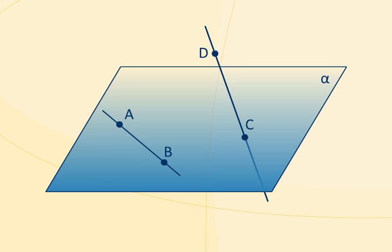Let's prove that the lines AB and DC are skew lines. We use the method of proof by contradiction.